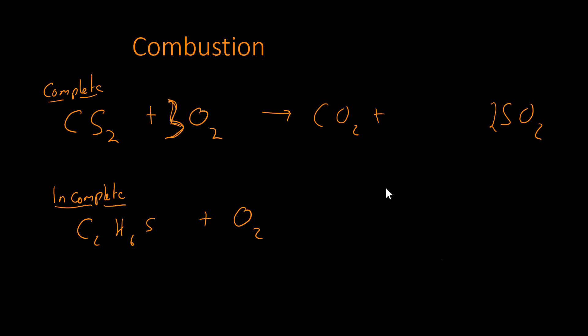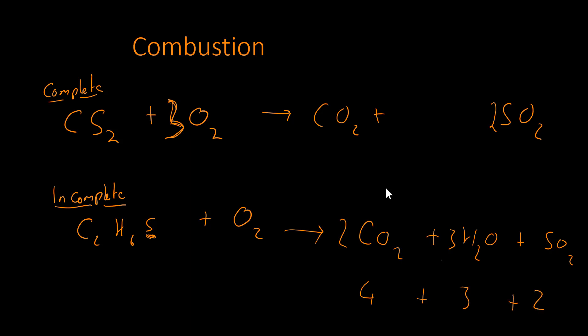For incomplete combustion of a sulfur-containing fuel that also has hydrogens, you produce water as well as SO₂. Balancing: 2 carbons → 2 CO; 6 hydrogens → 3 H₂O; 1 sulfur → 1 SO₂. Count oxygens on the right: 2×2=4 + 3×1=3 + 1×2=2 = 9 total, so we need 4.5 O₂. Key rule: if there's no hydrogen you can't make water; if there's no carbon you can't make CO₂; if there's no sulfur you won't make SO₂.